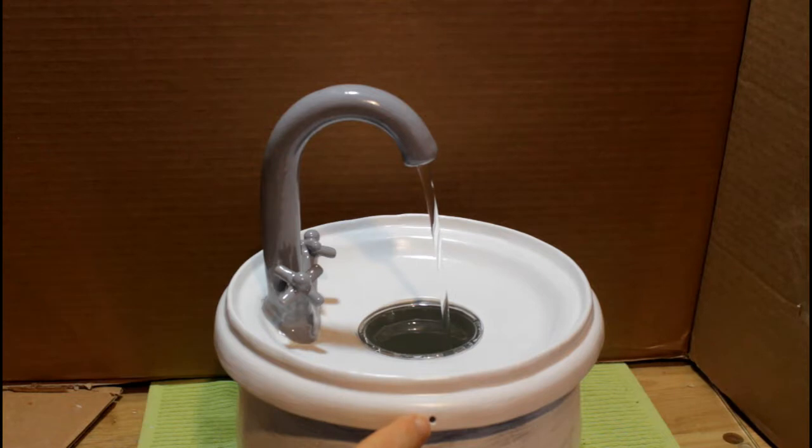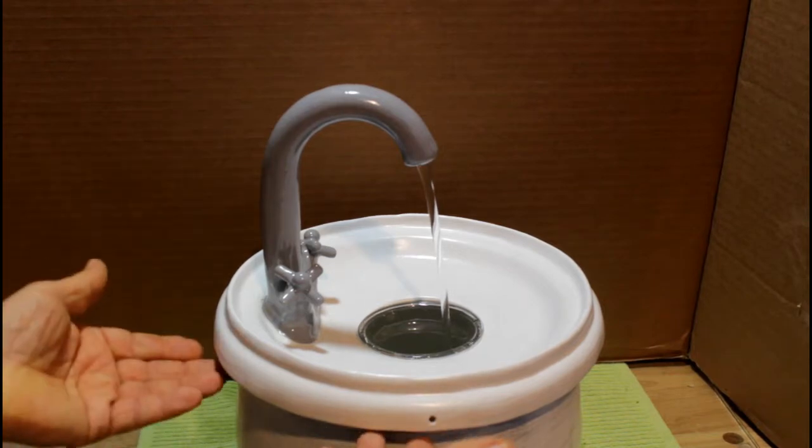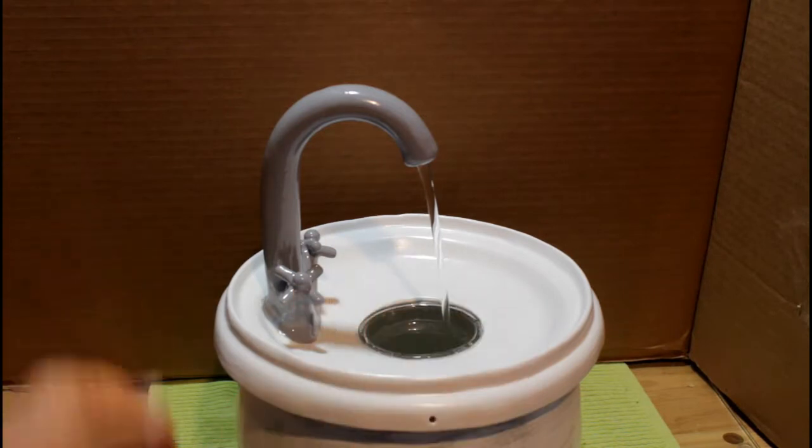The lid can be secured with cotter pins. Stainless steel cotter pins go through this hole into a hole in the bowl, so the cat can't lift up the lid.